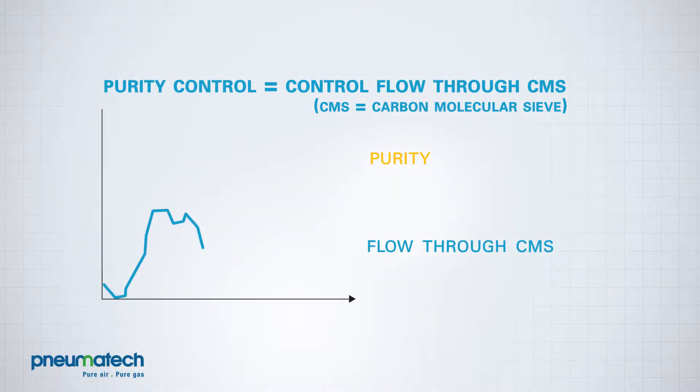The purity we achieve with the nitrogen generator depends entirely on the flow. Low flow results in high purity, while high flow reduces the purity.